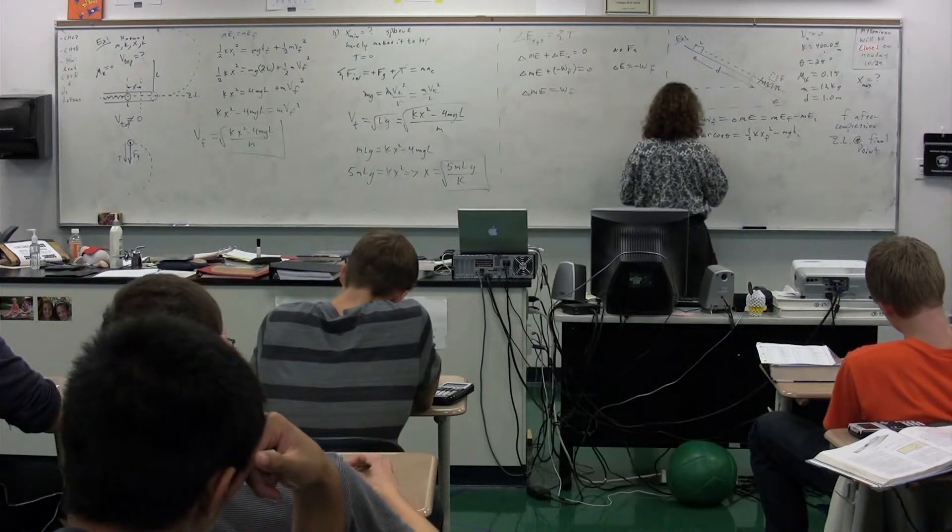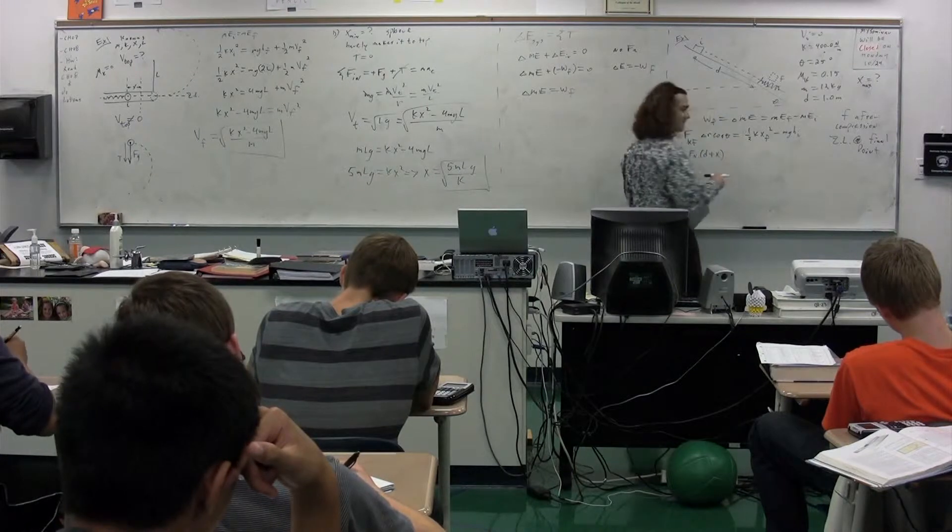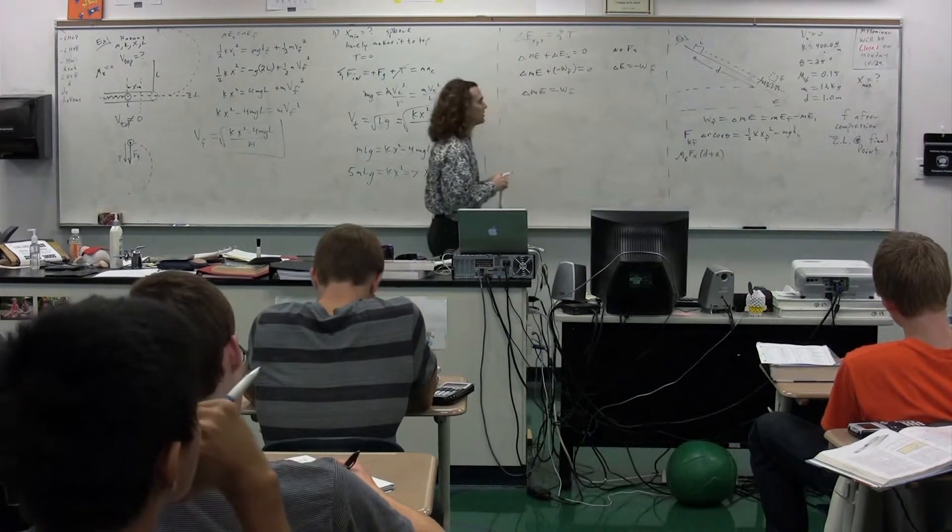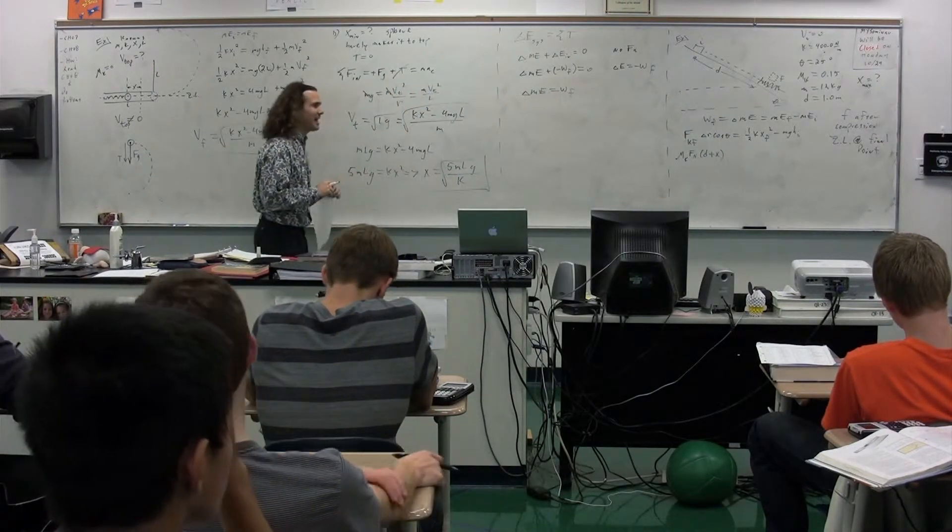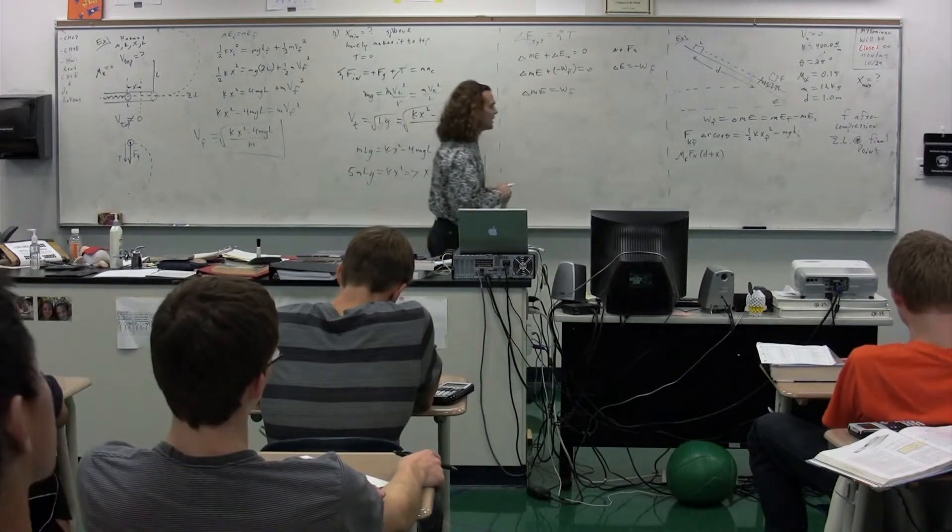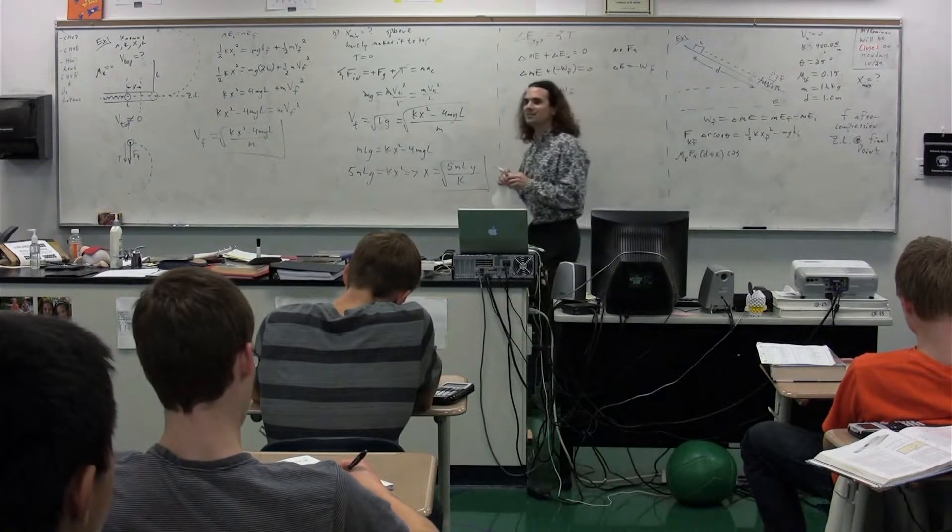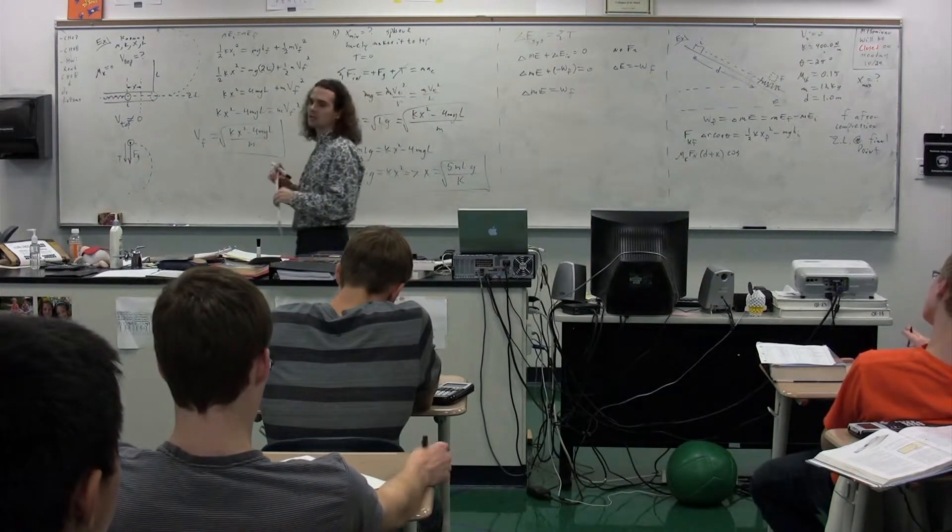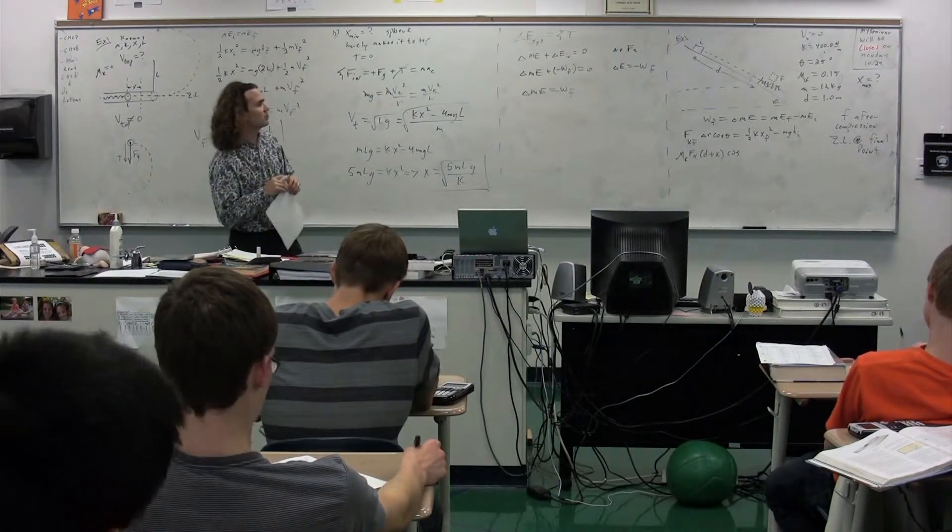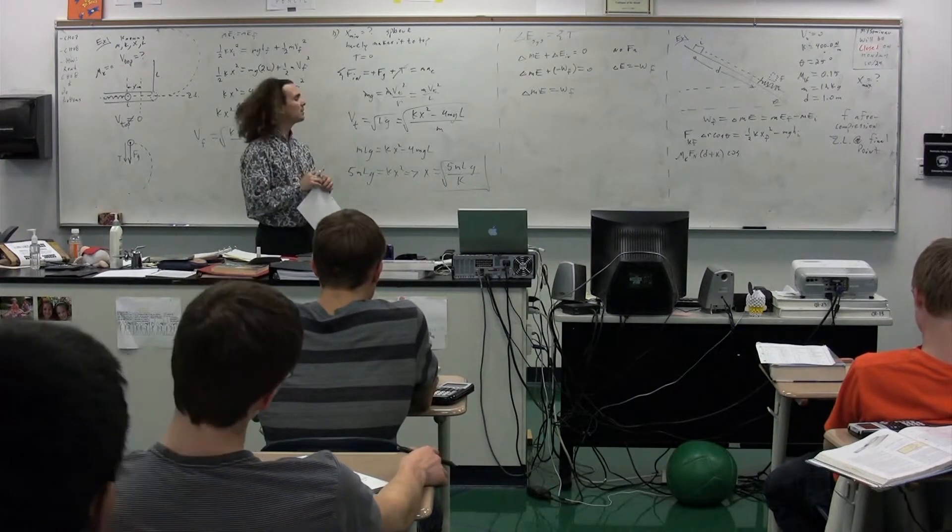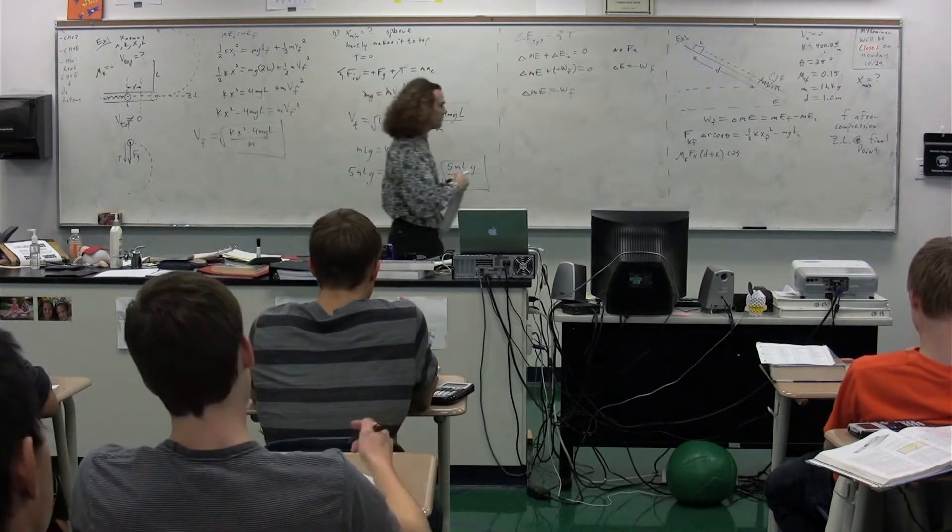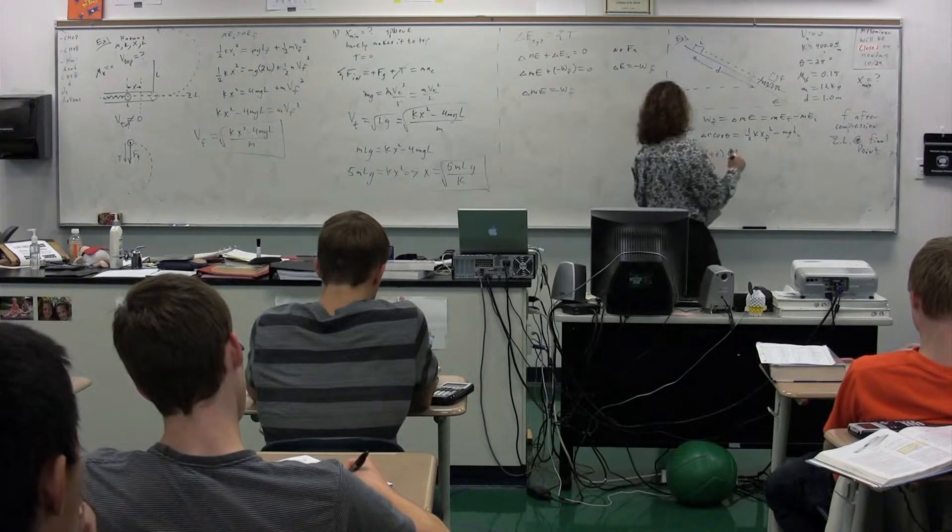Note, delta R is D plus X, right? Because it goes a distance D before it runs into the spring and X after it runs into the spring. Times the cosine of theta. We might as well identify the theta at this point. What is the angle between the force kinetic friction and the displacement? Bailey? The force of kinetic friction is up the incline. The displacement is down the incline. So 180.